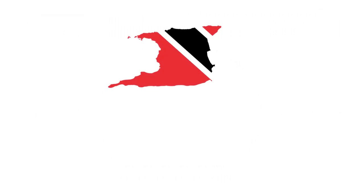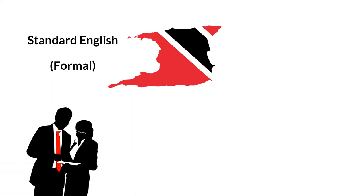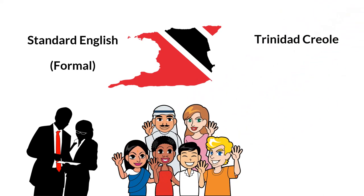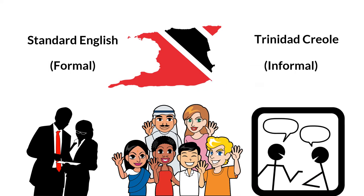In Trinidad, the official language is Standard English. It is the language you learn in school and you are expected to use it for formal occasions — for example, if you are interviewing for a job or making a speech at a graduation. However, most people also speak Trinidad Creole, a language that developed due to the mixing of different languages of people who settled here over time. Most people use Trinidad Creole in informal occasions, for example when talking to friends and family. Trinidad Creole is also used to make beautiful songs and poetry.